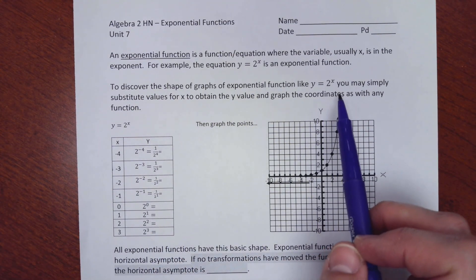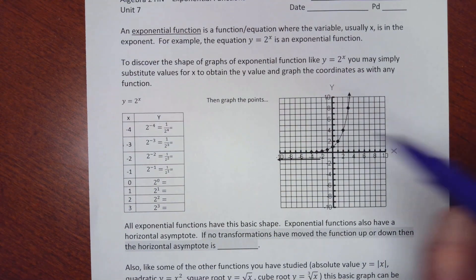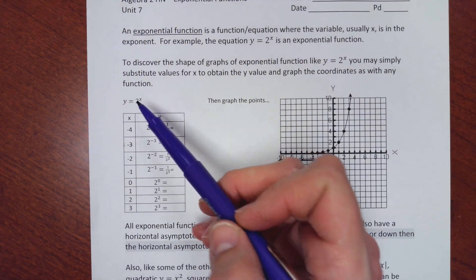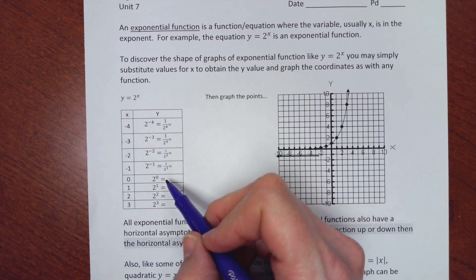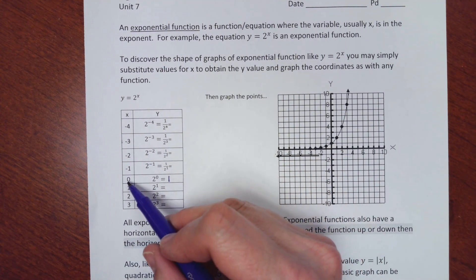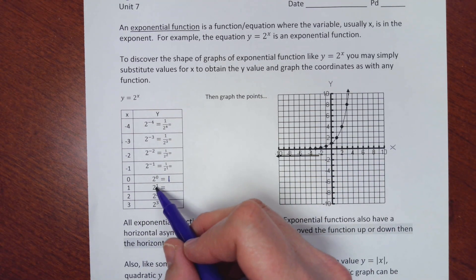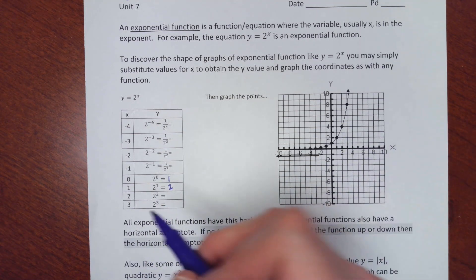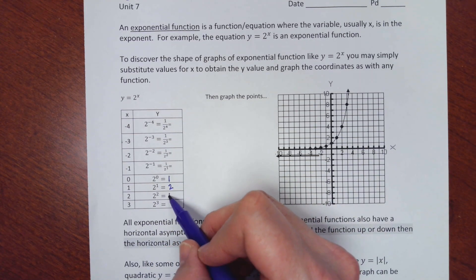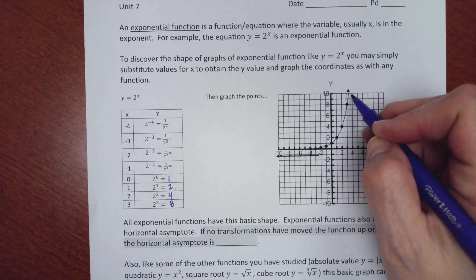To discover the shape of the exponential function, let's graph some. If we plug numbers into y = 2^x: plugging in 0 gives 2^0 = 1, so we get the point (0, 1). Plugging in 1 gives 2, so the point (1, 2). Then 2 gives 4, and 2^3 is 8. You can see it starts to grow rapidly.